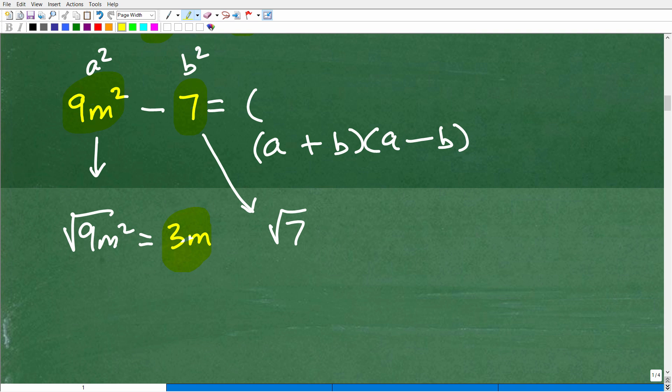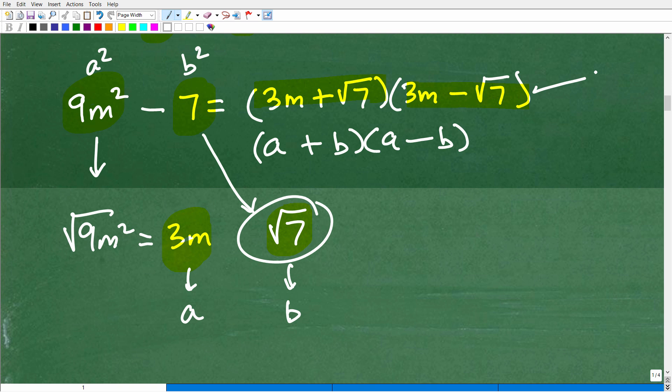Okay, this is going to be our a, and this will be our b. Okay, so this is a, and this is b. So this would be 3m plus the square root of 7 times 3m. I think I could do a little bit better on that. Hold on. 3m minus the square root of 7. Okay, so these are the factors. So you're not going to always have like a perfect square, like 25 or 36 or, you know, 100 or something like that. So you can even write these factors like this.